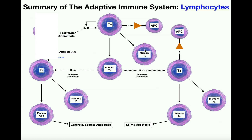Memory helper T cells don't do anything for the immediate immune response — they just hold a memory of this antigen. So this memory helper T cell remembers the Staphylococcus aureus antigen, and if there are any subsequent exposures years down the line, it would recognize this antigen. The effector helper T cell, on the other hand, is the active general — it is now sensitized to and activated against this antigen, and it will coordinate the immune response specific to staph aureus.